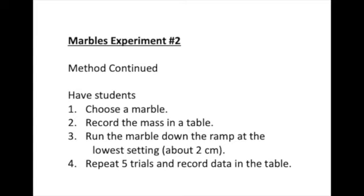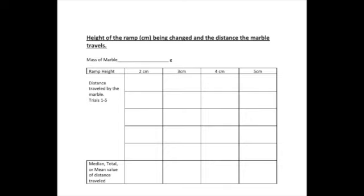They choose a marble, record the mass, run the marble down the ramp at about two centimeters, and repeat the trials five times. And record the data in the table something like this.